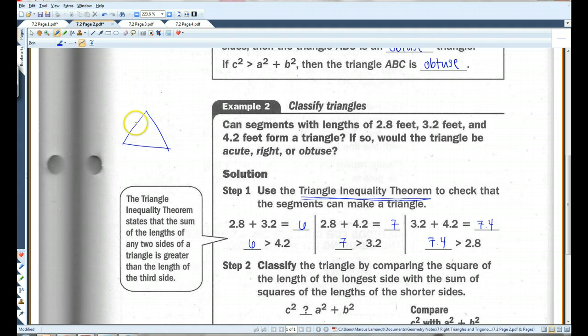So, if I took this side, let me use a different color, if I took this side and added it to this side, it has to be bigger than the third side. Has to be, or else you don't have a triangle. If you have two sides, that one put together, they're smaller than the third side, no matter how I bend these two sides, they're never going to touch. They're just too short. The only way you can form a triangle is if any of the two sides create a segment bigger than the third side.